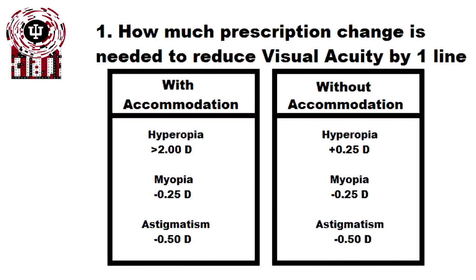How much prescription change is needed to reduce visual acuity by one line? With accommodation, any amount of hyperopia could still see 20/20. It takes a large amount of hyperopia to start to see a reduction in acuity, either at distance or near. Certainly you'll see it at near before you'll see it at distance. But with accommodation, they could possibly see 20/20 at distance or near, depending on the amount of hyperopia. Conversely, myopia, an increase in a quarter diopter will reduce acuity by one line. And typically for astigmatism, a half diopter will reduce it by one line.